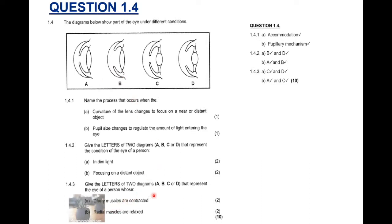1.4.3: Give the letters of two diagrams that represent the eye of a person whose ciliary muscles are contracted. Now, you should know ciliary muscles contract in near vision. Now, how will you be able to tell which of the pictures are showing near vision? The lens is more convex or more rounder. So, your answer is C and D. And then the last one, B, where the radial muscles are relaxed. Now, you know the radial muscles are relaxed in bright light. So, bright light, what will happen to the pupil? The pupil must be more constricted or closed to let less light in. So, your answer is A and C. This is a very lovely question. Make sure you go over this question. Make sure you master this, because here you need to know the processes to be able to apply it. And it's quite scary that this is in question 1.4. It's in section A. So, learn your work well.